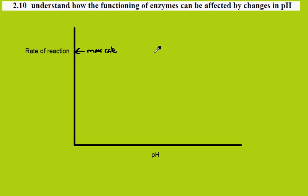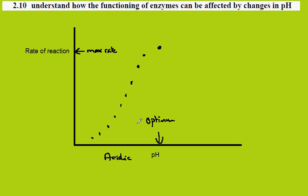If we then repeat the reaction at lower pHs — so these would be acidic conditions — then the rate of reaction gradually decreases. So as we go from the maximum rate of reaction, this pH here is the optimum pH, and the rate of reaction decreases.